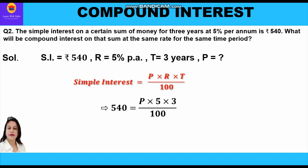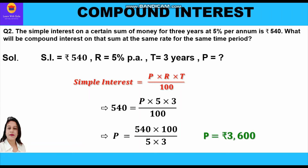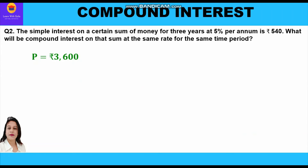Putting in the values: 540 = P × 5 × 3 / 100. Cross-multiplying: P = 540 × 100 / (5 × 3). Solving this, we get the principal as rupees 3,600.